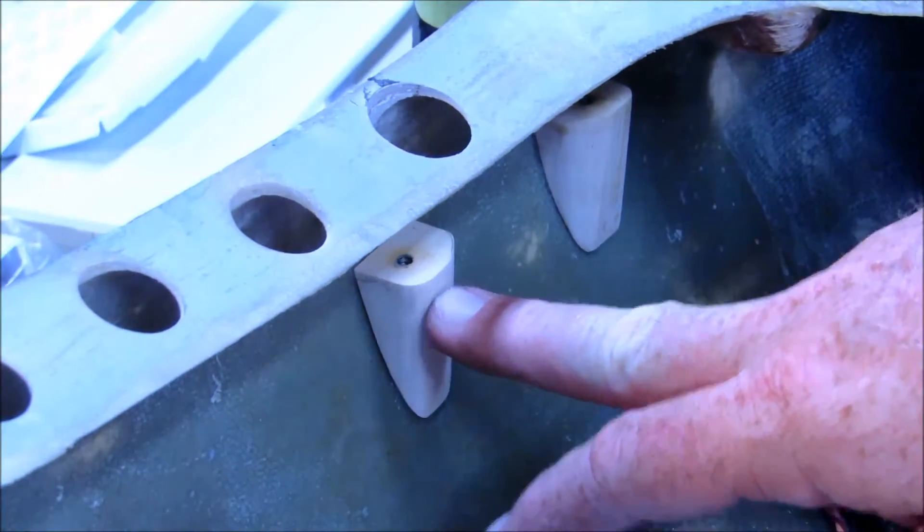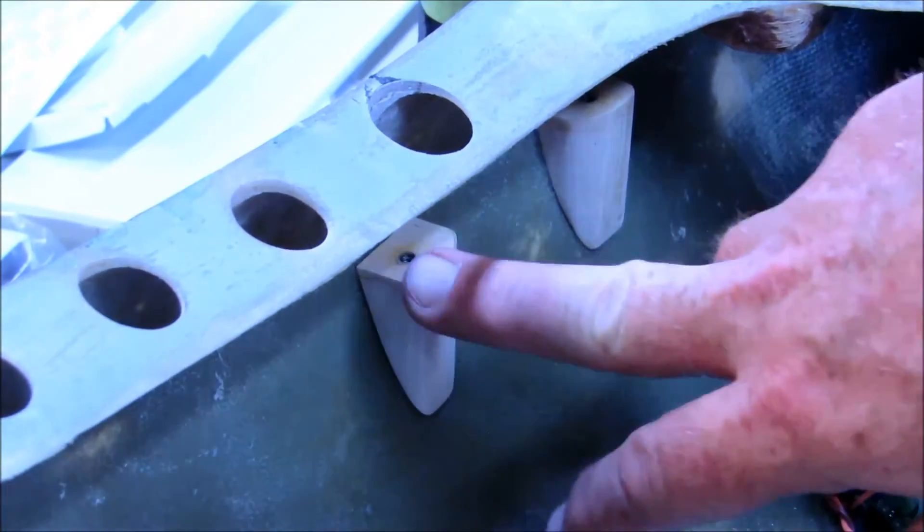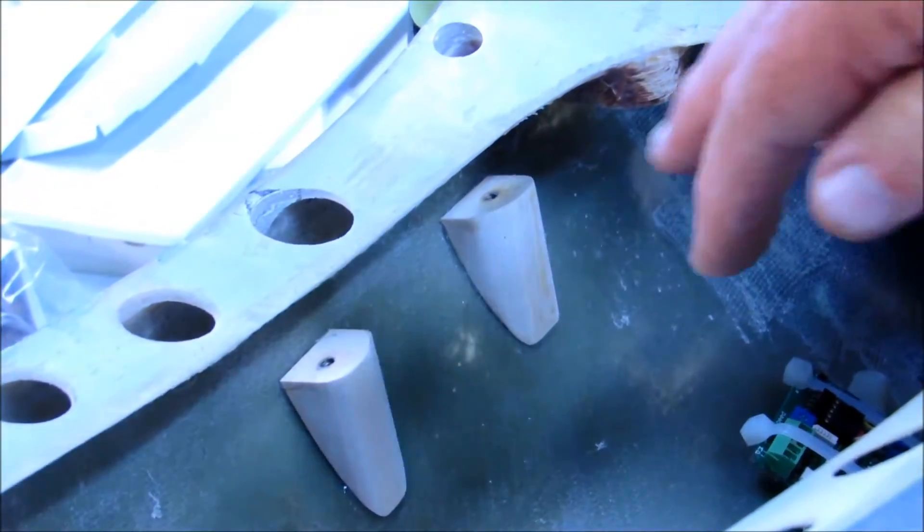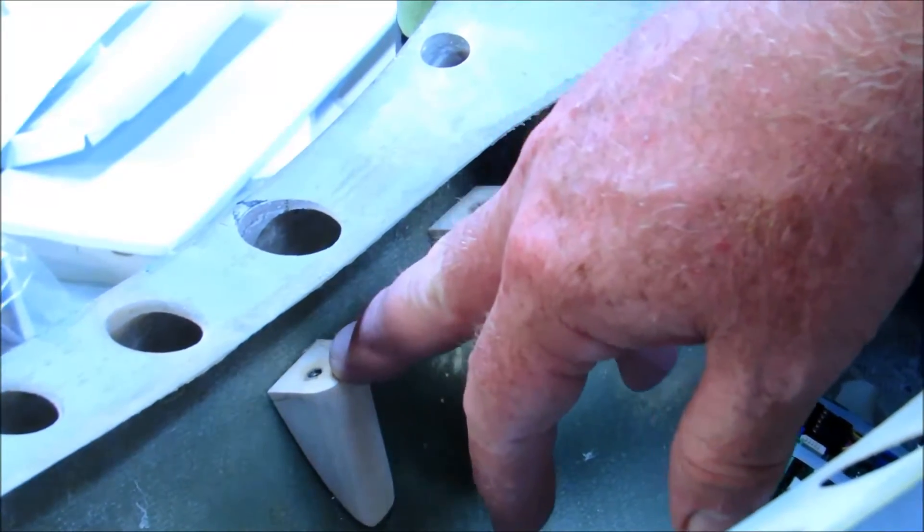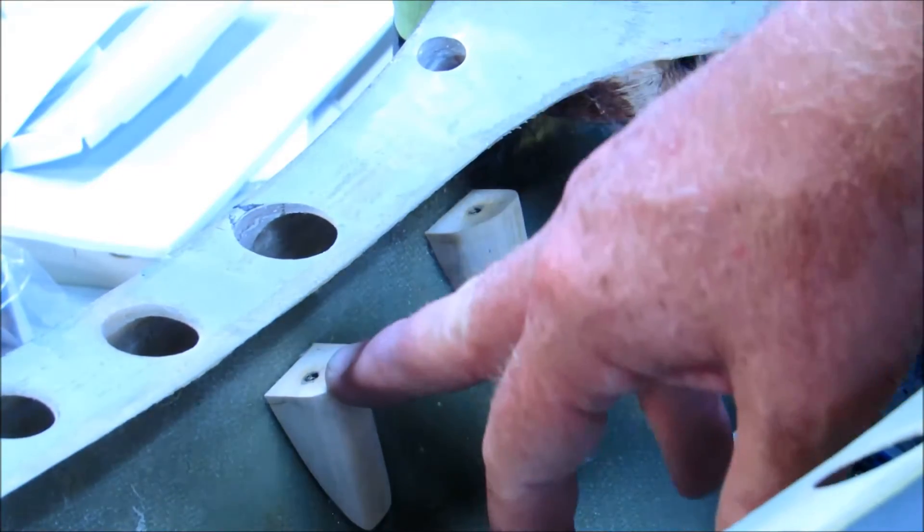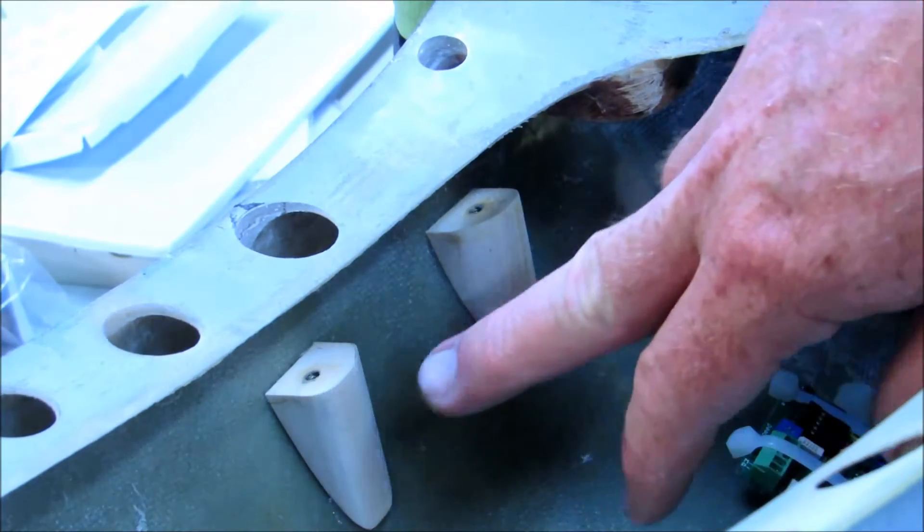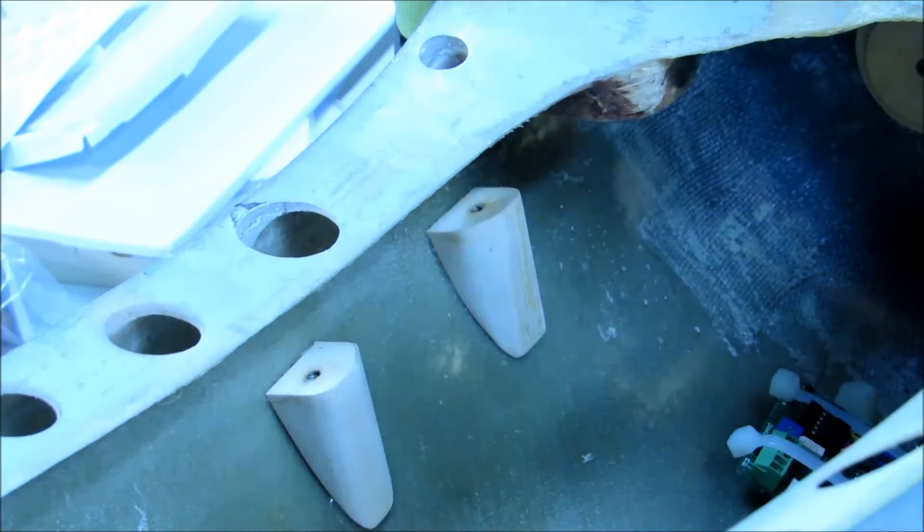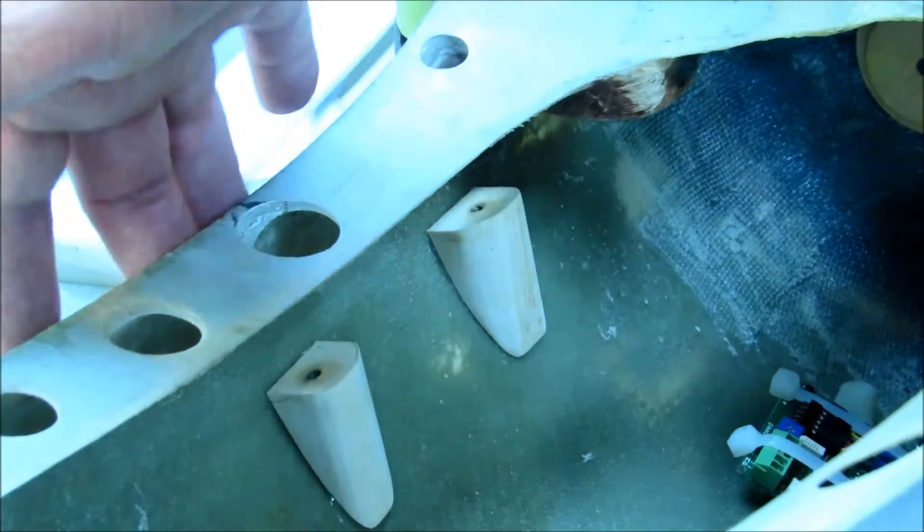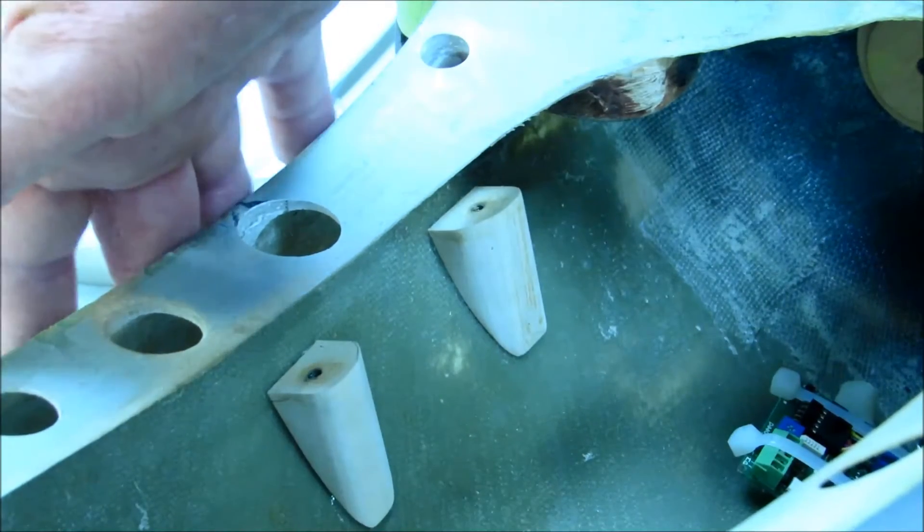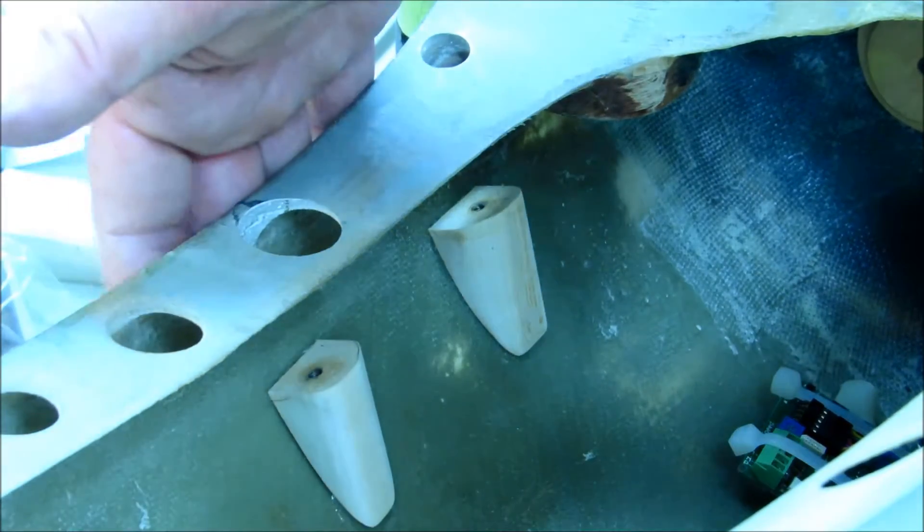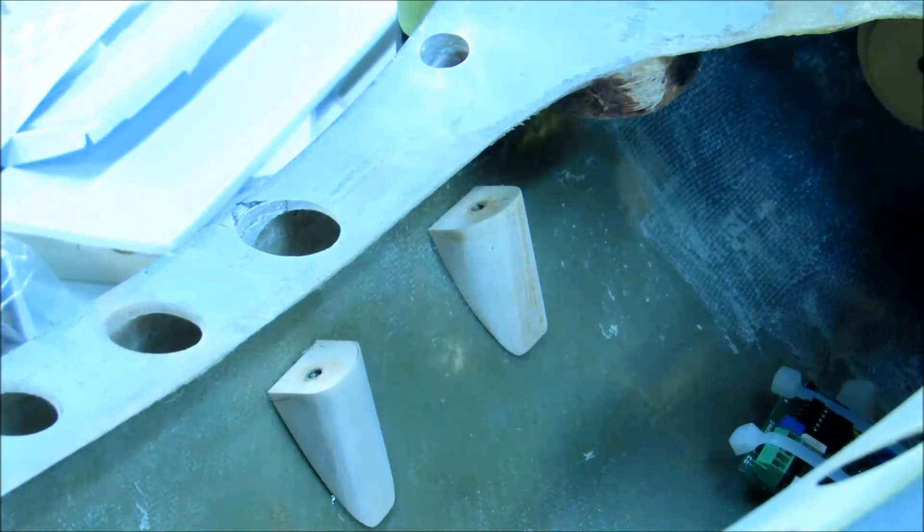So these are bass wood bosses that have 632 brass threaded inserts high sawed into them and eventually I'll get around to sinking some wood screws in from the outside of the fuselage through the fiberglass and into the bass wood. And then I'll encapsulate them with a little bit of fiberglass cloth.